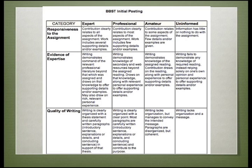In this rubric, we say that the following things count: responsiveness to the assignment, evidence of expertise, quality of writing, and so forth. Then, across a given row, we describe the different levels of performance. You'll find the complete rubric in the General Information Instructor's Manual.